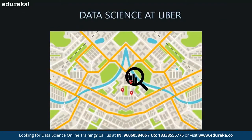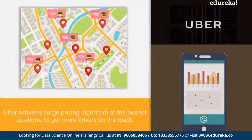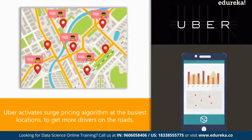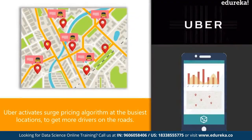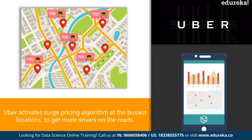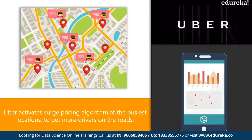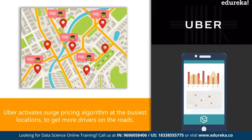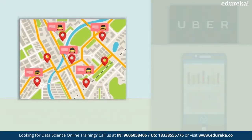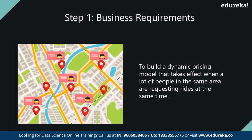Uber implements data science to find out which neighborhoods will be the busiest, so that it can activate surge pricing to get more drivers on the road. In this manner, Uber maximizes the number of rides it can provide and hence benefit from this. Uber's surge pricing algorithm uses data science. A data science process always begins with understanding the business requirement or the problem you're trying to solve.